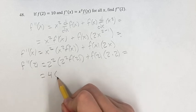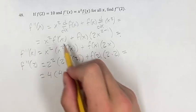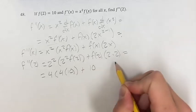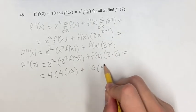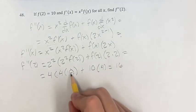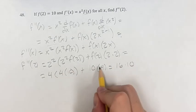This is equal to 4 times 4, and then f(2), we know, is 10, plus 10 times 2 times 2, which is 4. This is 4 times 4, which is 16, times 10, plus 10 times 4 is 40.